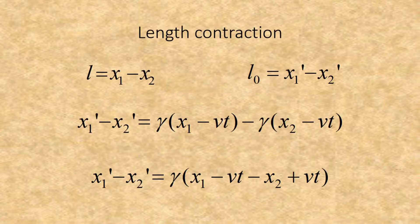In deriving length contraction, we need to start out by defining L as x1 minus x2, and L sub 0 equals x1 prime minus x2 prime. Now L sub 0 is the proper length — it is the length you would observe if you were in the same reference frame as the object. The key to understanding the difference between length contraction and the Lorentz transformation formula is that the Lorentz transformation formula is dealing with specific points in space.